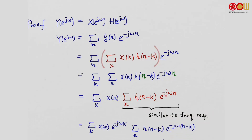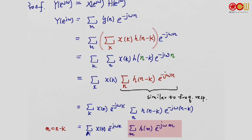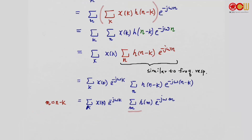To make it look like the frequency response, we substitute n−k in the exponent. This introduces an extra term e^{−jωk}. Now the second summation is just like the frequency response. We make the change of variable m = n−k, so the summation becomes over m from −∞ to ∞. We recognize this as the Fourier transform of the sequence h — the frequency response H(e^jω). And the outer term is the spectrum X(e^jω). So Y(e^jω) = X(e^jω) · H(e^jω). Done.